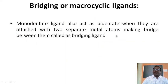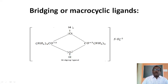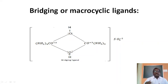Bridging ligands are monodentate ligands with only one donor atom, but that atom bridges between two central metallic atoms by donating lone pairs to both. For example, an OH group where the oxygen donates a lone pair to one Co³⁺ and also donates to a second Co³⁺, forming a bridge between the two cobalt centers. The oxygen between the two cobalt atoms is the bridging atom, and this type of ligand is called a bridging ligand.